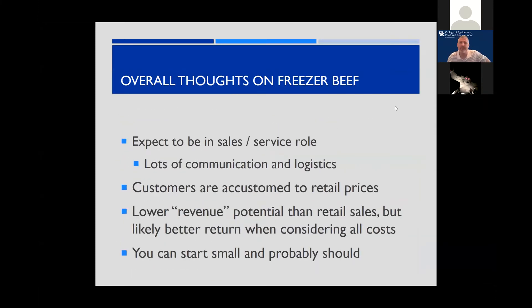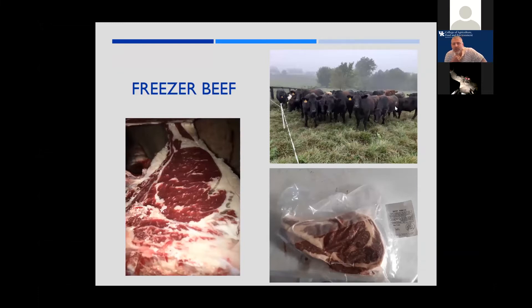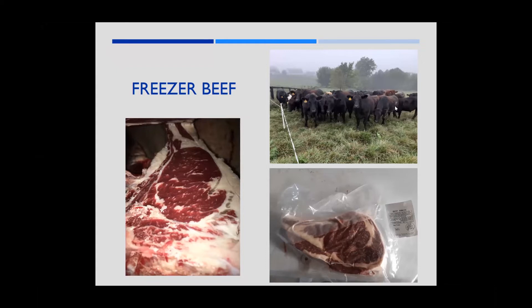Kenny begins focusing on freezer beef marketing. He shows pictures from their own work — sorting cattle in October or November, a carcass grading photo showing that three forage-fed cattle sent back in the summer graded mid-Select, and a ribeye steak from this fall's harvest.